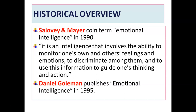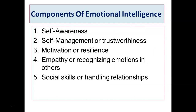Daniel Goleman has done extensive work on emotional intelligence — he gave a publication titled 'Emotional Intelligence' in the year 1995, and is very extensively followed when we read about emotional intelligence. Goleman gave 5 components of emotional intelligence: self-awareness, self-management or trustworthiness, motivation or resilience, empathy or recognizing emotions of others, and social skills or handling relationships. The first three — self-awareness, self-regulation, and self-motivation — are personal; and empathy and social skills are social.